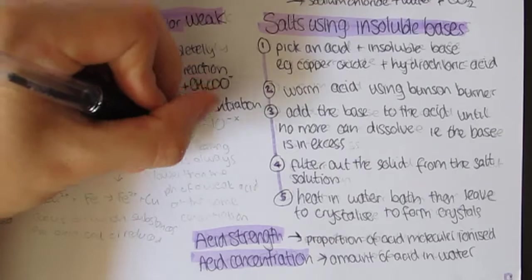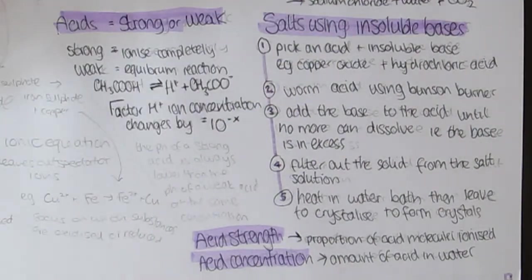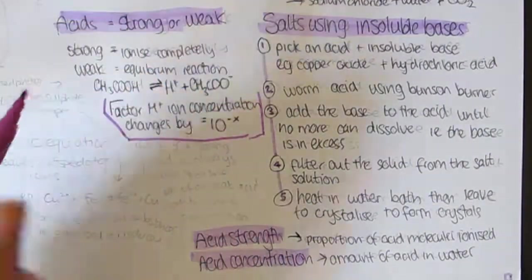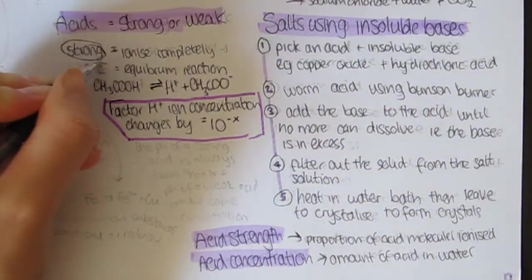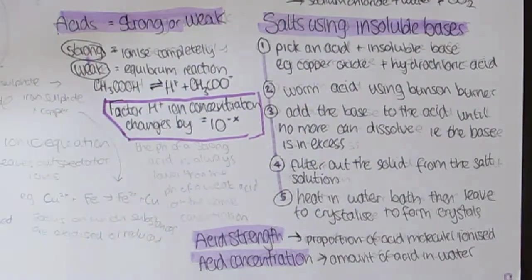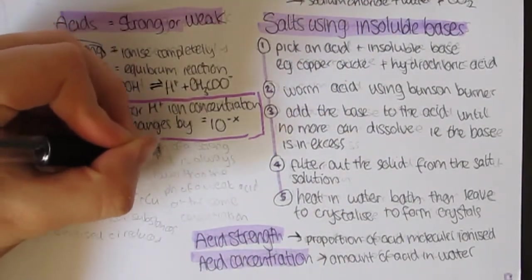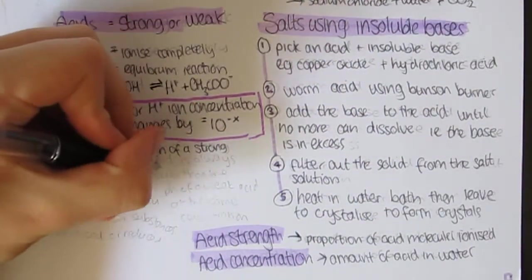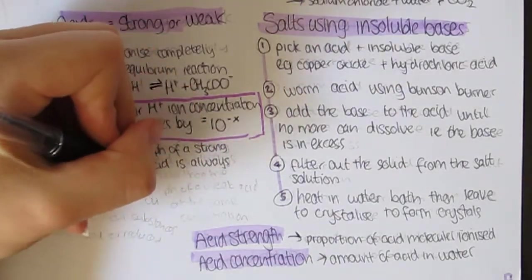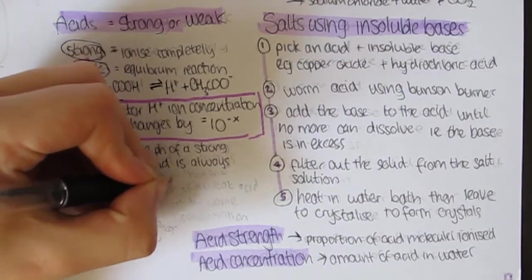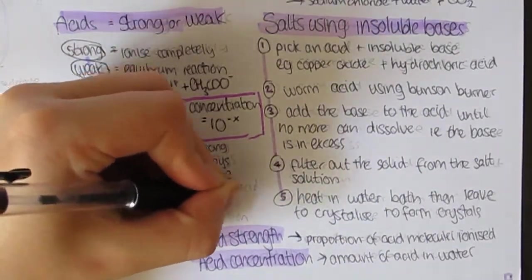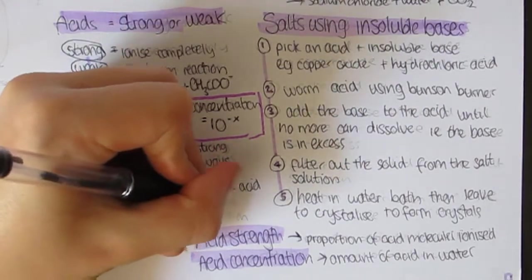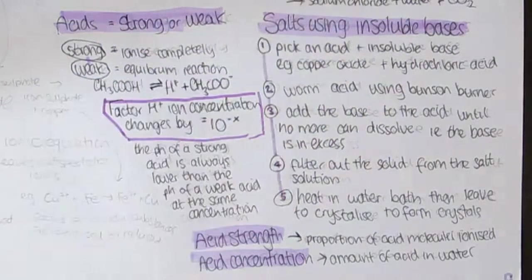The pH of an acid or alkali is a measure of the concentration of H+ ions in the solution. Every decrease in one on the scale, the concentration of H+ ions increases tenfold. This can be shown by the formula.